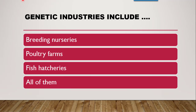The next question is: genetic industries include — whether it is breeding nurseries, poultry farms, fish hatcheries, or all of them. The correct answer is all of them, because genetic industries deal with reproduction and multiplication of plants, animals, and birds. Breeding nurseries, poultry farms, and fish hatcheries are all involved in the reproduction and multiplication of animals and birds.